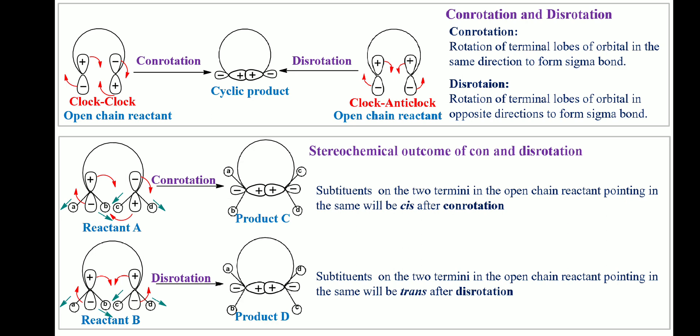Reactant B after disrotation gives product D. If we examine the relative stereochemistry of groups A, B, C, and D, we find that in product D, groups A and B are respectively trans to C and D. So, after disrotation, two groups on the terminal lobes of the open-chain reactant pointing in the same direction will be trans in the cyclic product, while those pointing in the opposite direction will be cis.